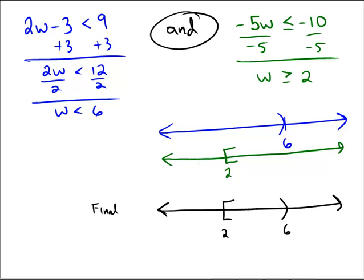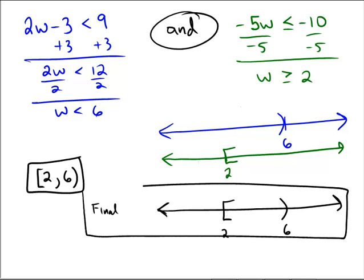And so the final answer in an interval notation, if you prefer that, would be starting at 2, including 2, and ending at 6, and not quite including 6. So there's an interval, and there is a graph.